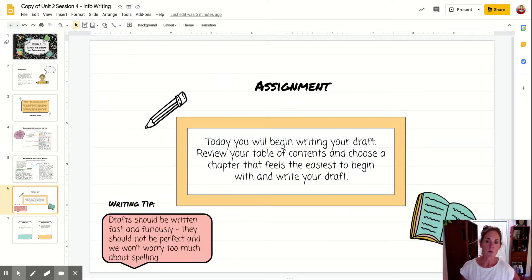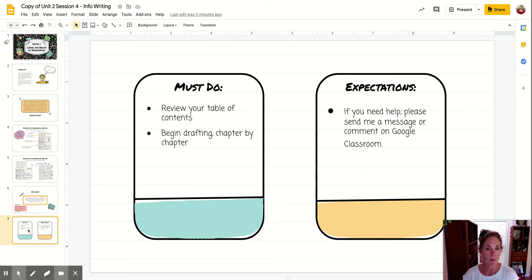So today you're going to be writing your draft. You're going to review your table of contents and choose a chapter that feels the easiest for you to begin to write your rough draft. So remember, they're not perfect. Rough drafts are rough. So do your best with spelling, but don't stress about it. Do your best with punctuation, but don't stress out about it. Do your very best, but it's more about getting the information out at this point than making it perfect, because you have plenty of time to work on making it perfect.